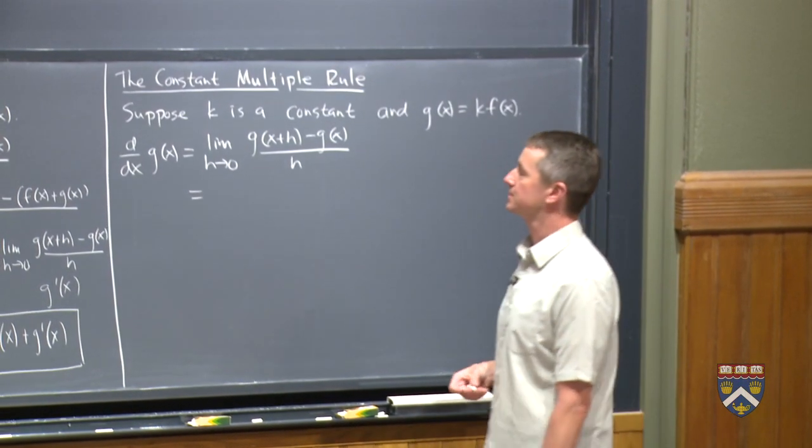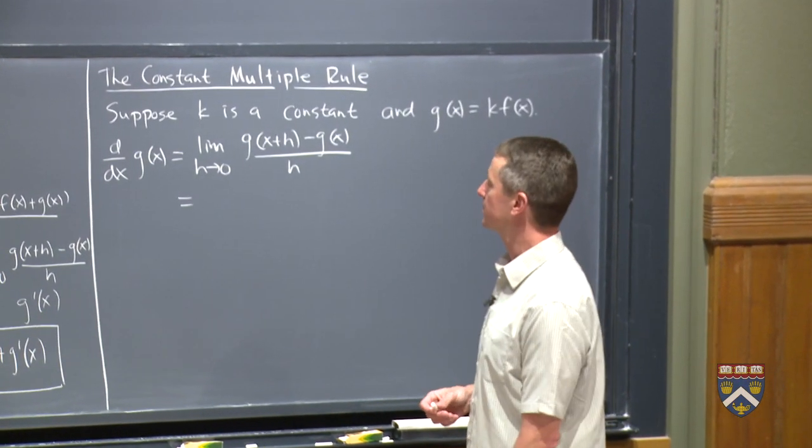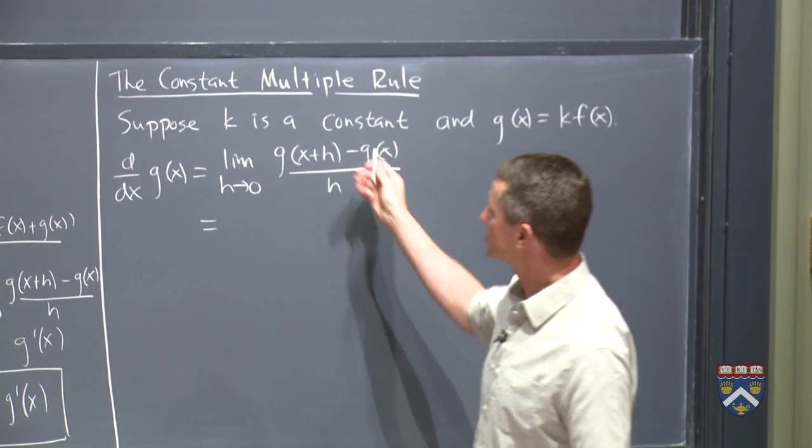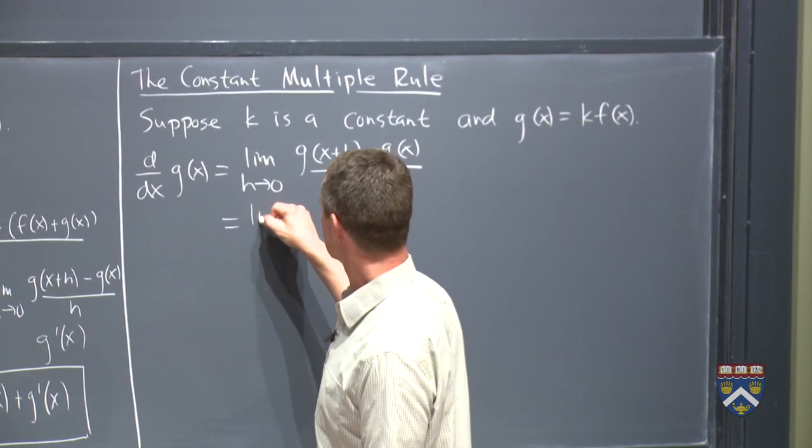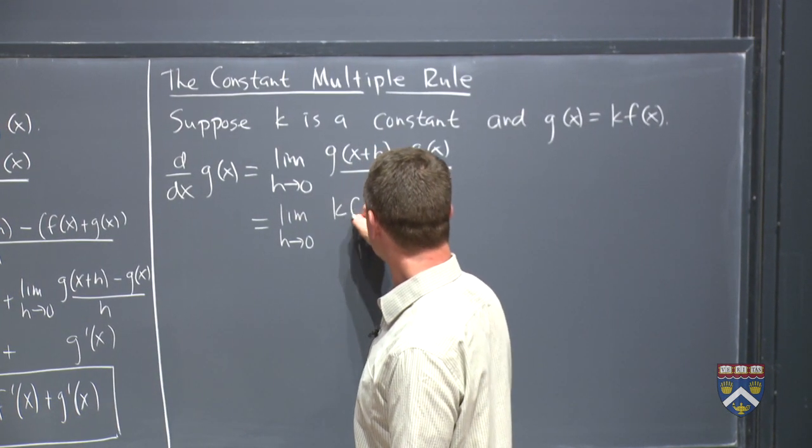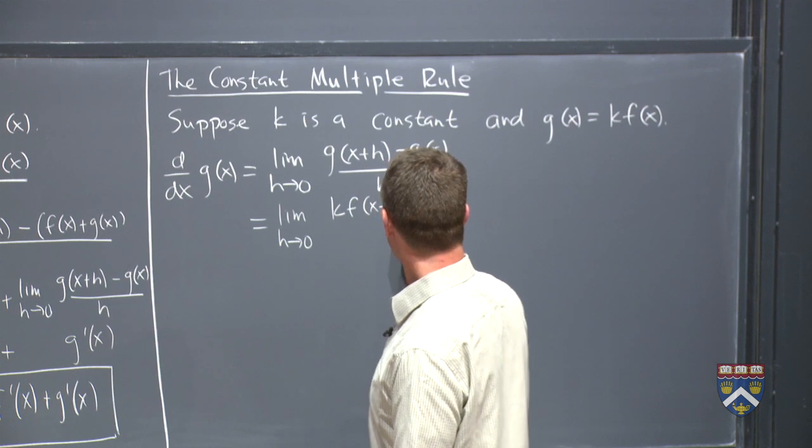Let's see if what we get using the limit definition is what you thought it should be. So our function g of x is kf of x. So when I do g of x plus h, that means k times f of x plus h, right?